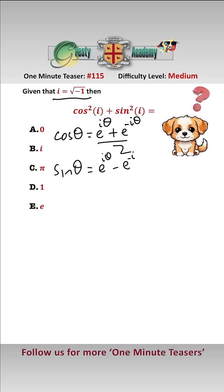So sticking in i, we have that cos i equals e to the i squared plus e to the minus i squared over 2, and sin of i equals e to the i squared minus e to the minus i squared over 2i.